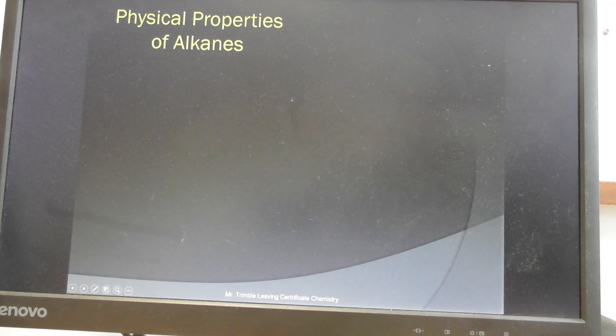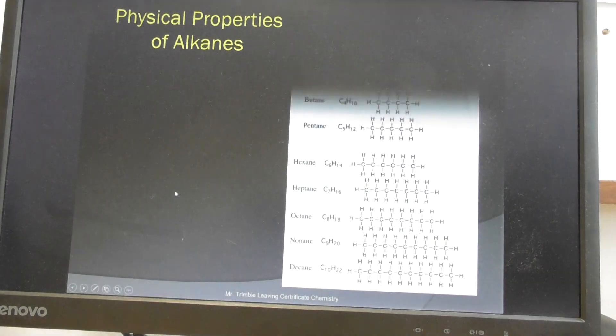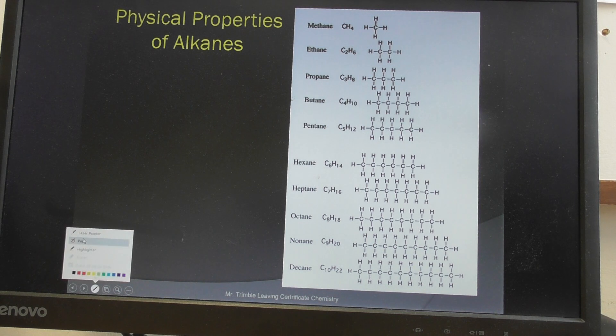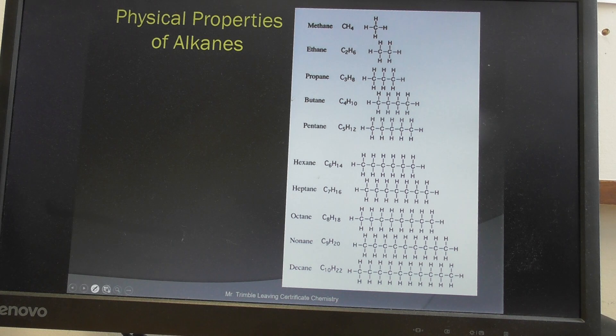So in this video we'll look at the physical properties of alkanes and then that leads on to alkenes as well, the next family of compounds, and then it becomes very repetitive. Some of the ideas that we'll talk about in this hopefully will allow us to carry those through all the organic families.